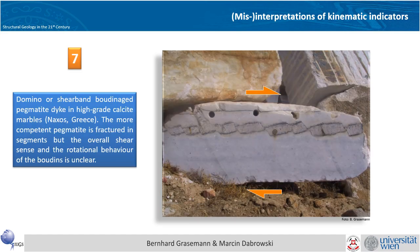The next example is from the famous quarries in Naxos where a pegmatite dike intruded into the marbles has been deformed in this kind of bookshelf boudinage. In many structural geology textbooks it has been warned that these are probably not very good shear sense indicators, because this could be interpreted as shear band boudinage giving the indicated top-to-the-right shear sense, or also as domino boudinage where the dominoes would have been rotated to the left, probably giving a top-to-left shear sense. So number 7 should appear in your list of ambiguous shear sense criteria.